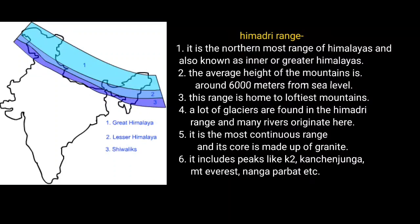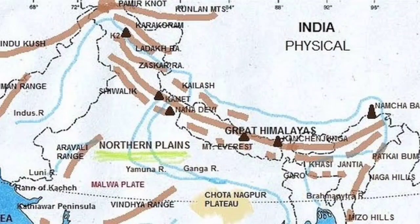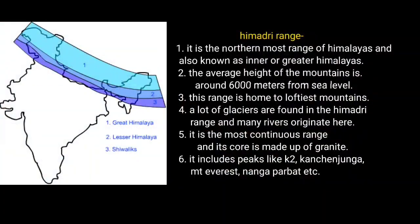The northernmost range of the Himalayas is known as Himadri or the Greater Himalayas. The average height of these mountains is 6000 meters, and some of the most important peaks lie here, as these are the loftiest mountain ranges among the Himalayas.